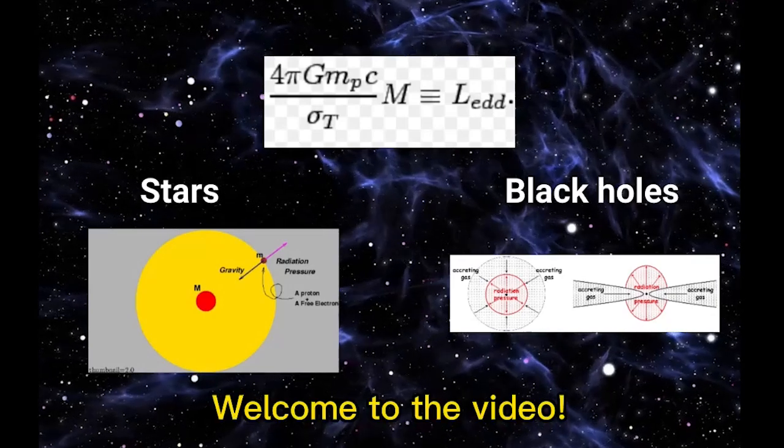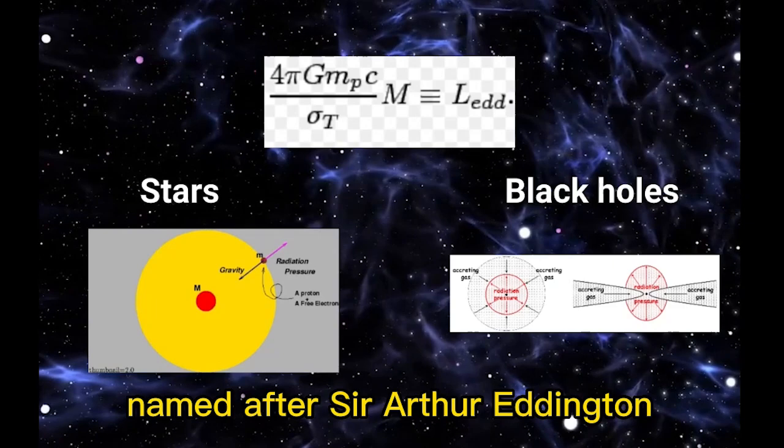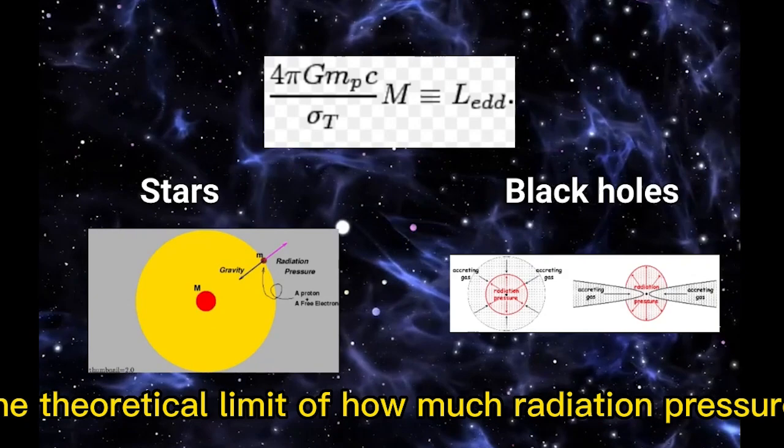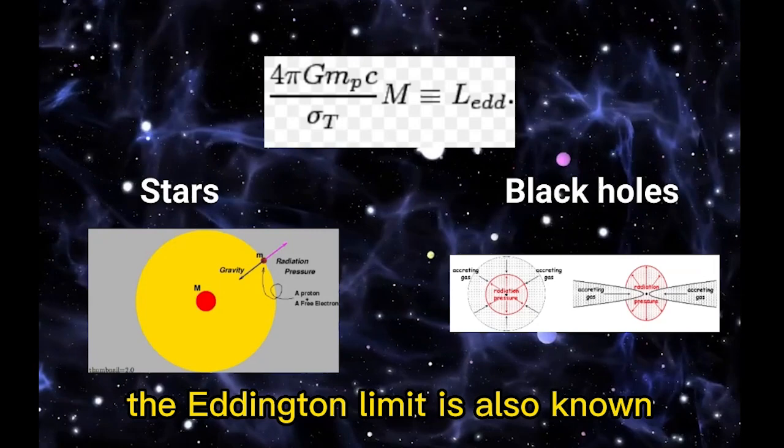Welcome to the video. Today we're talking about the Eddington limit, named after Sir Arthur Eddington, an English astronomer and physicist who first derived the theoretical limit of how much radiation pressure a star could withstand before it would be destroyed. The Eddington limit is also known as the Eddington luminosity or the Eddington mass accretion rate.